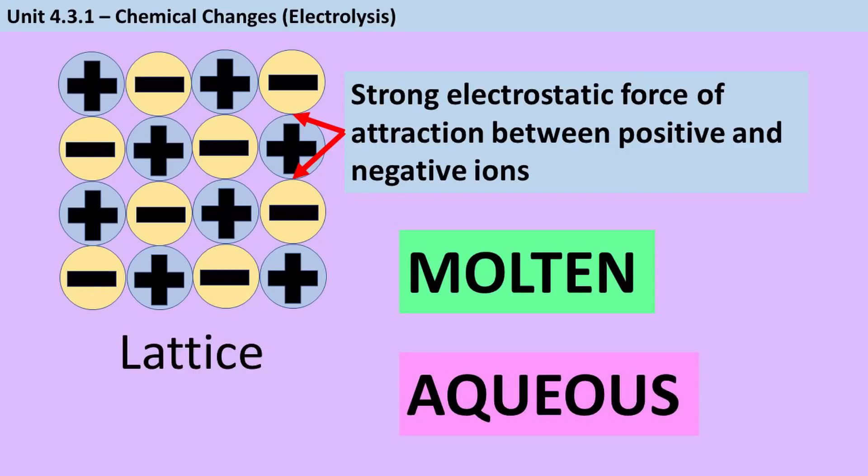You can do this in two ways, either by heating the compound, usually to a really high temperature because the bonds are so strong, or by dissolving it in water, making it what we call an aqueous solution. So we're going to look at how these two methods work, starting with a molten compound, as that's the easier situation.